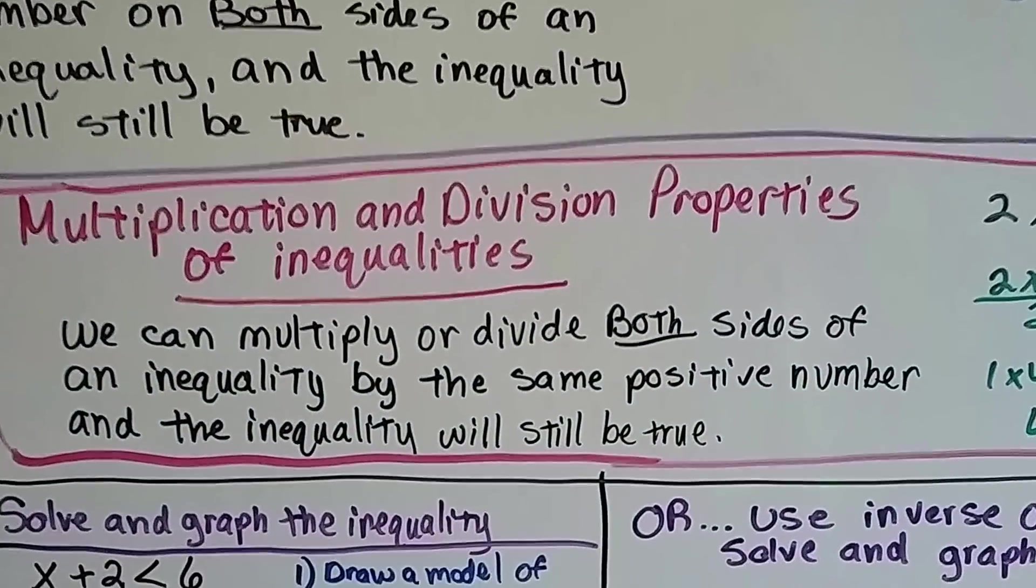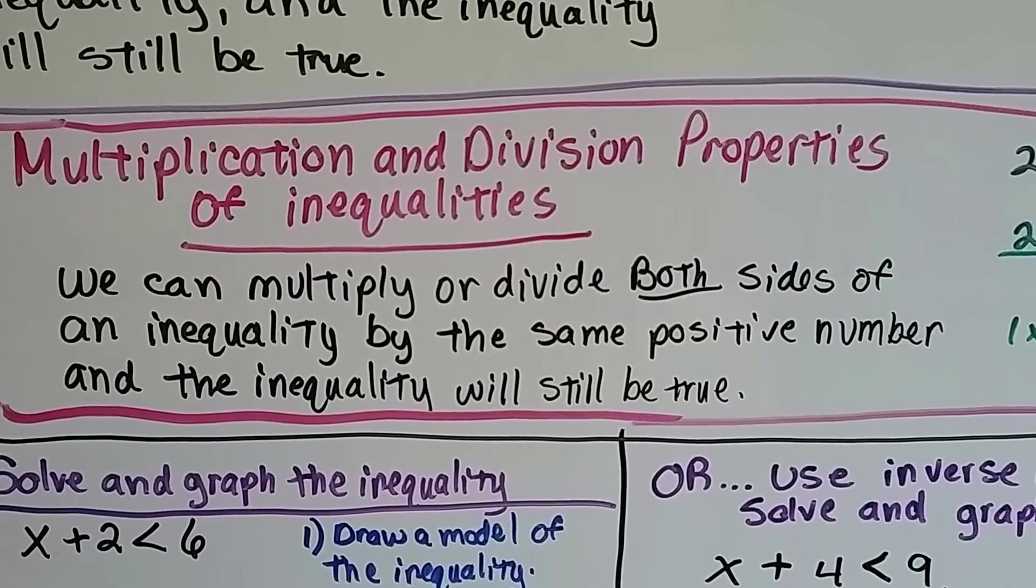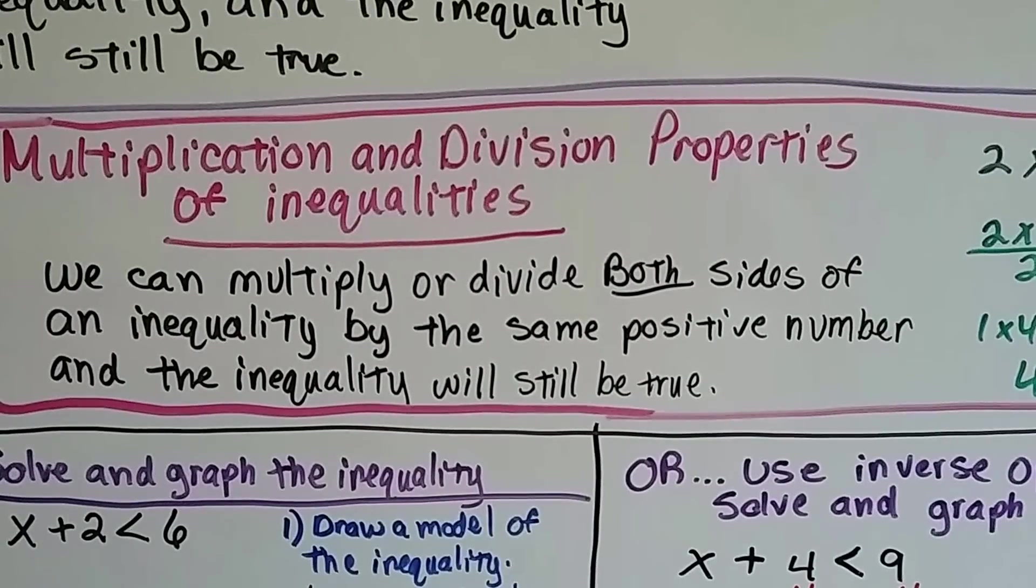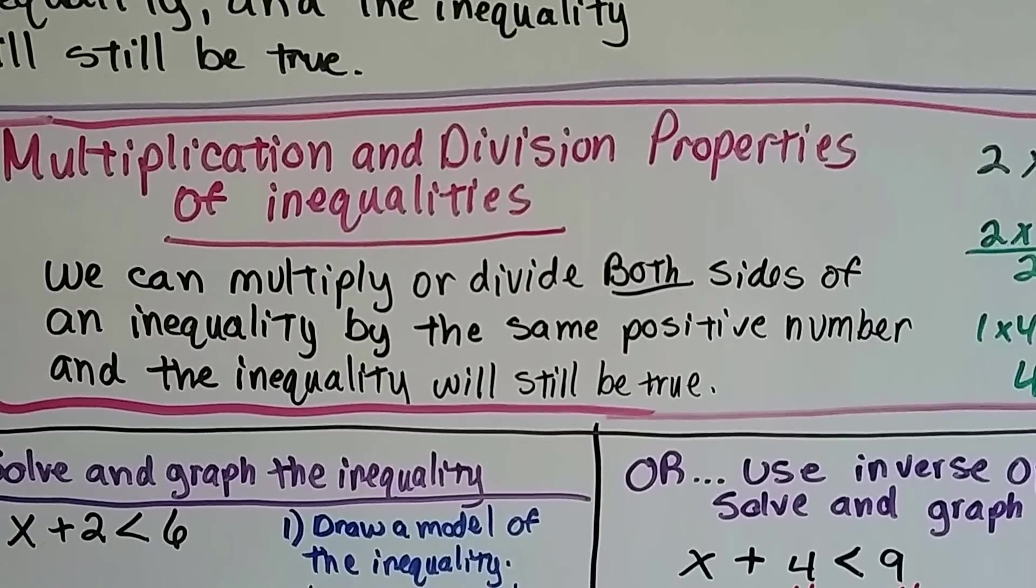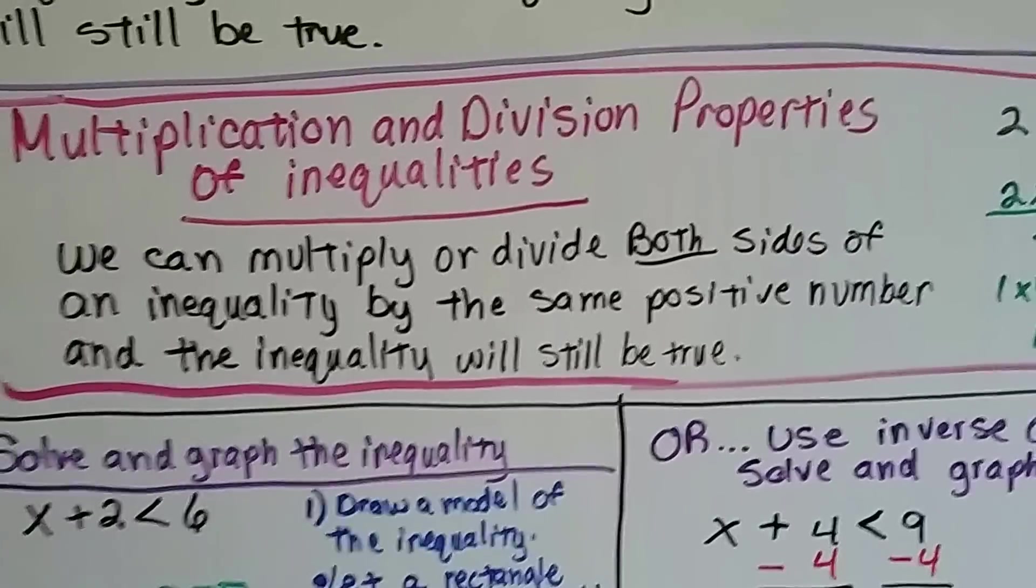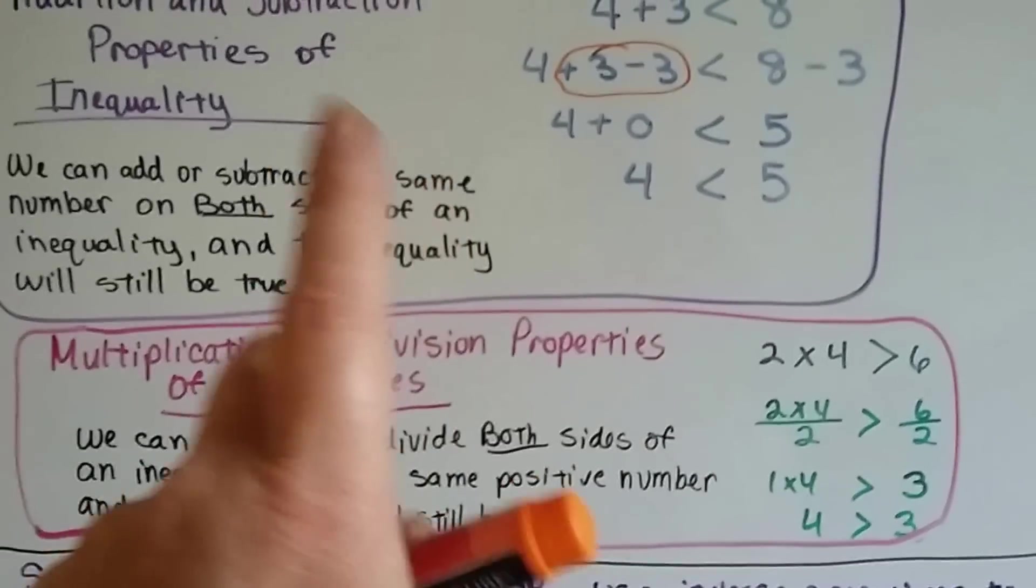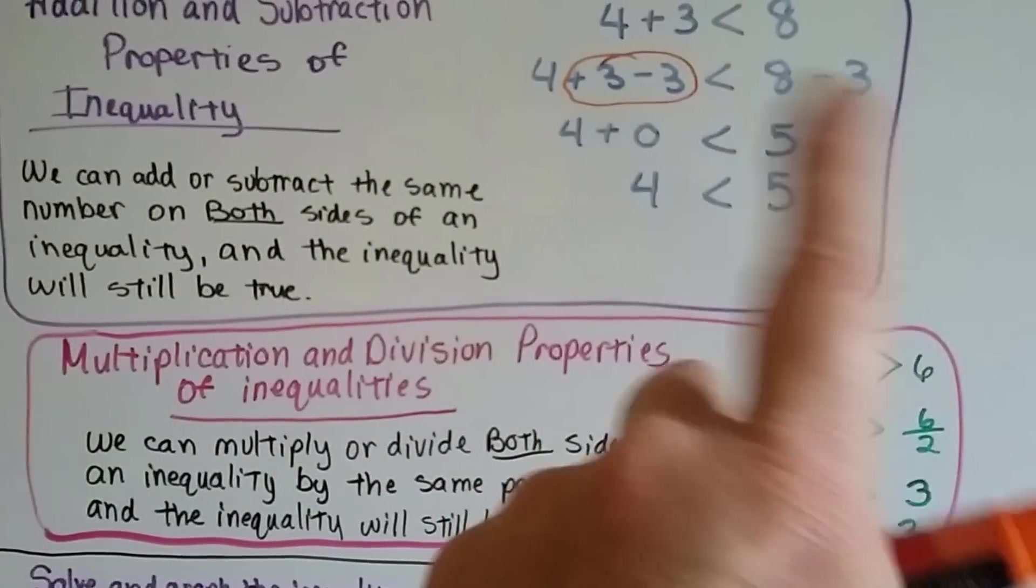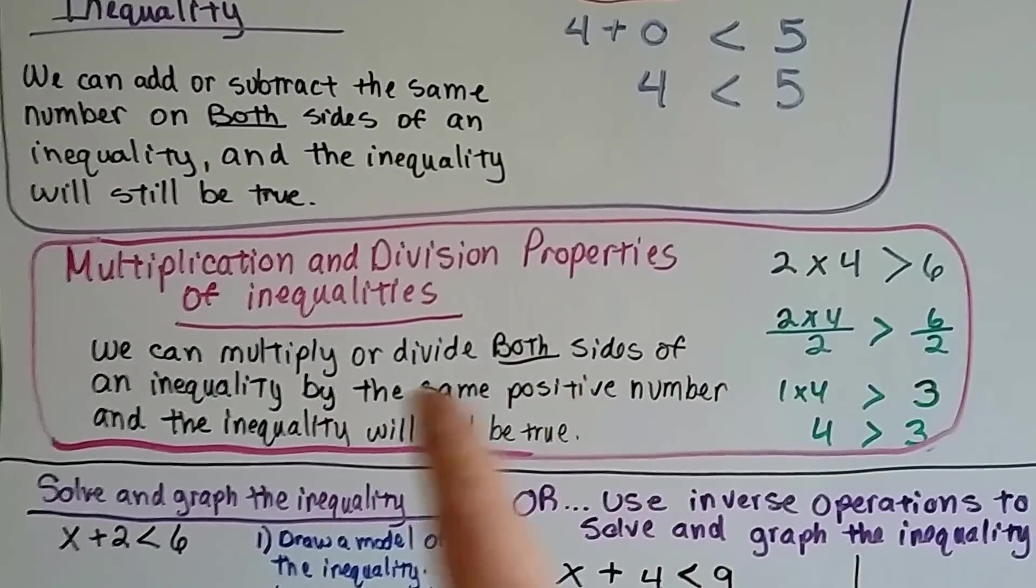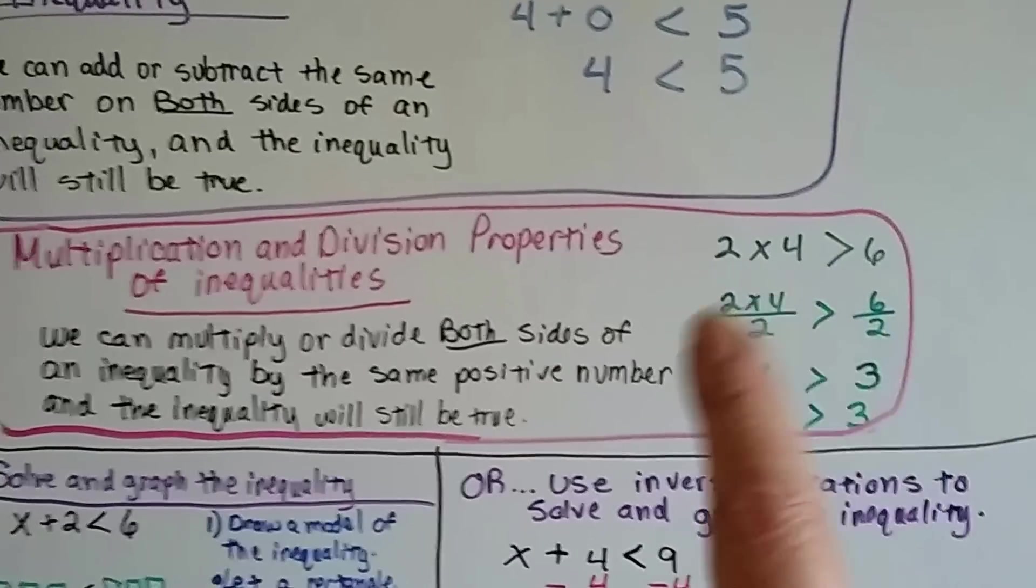Now the multiplication and division properties of inequalities say that we can multiply or divide both sides of an inequality by the same positive number, and the inequality will still be true. So it's just like this one, but instead of adding or subtracting on either side to isolate a variable, it's saying to multiply or divide on either side, and we can isolate a variable, and it'll stay true.